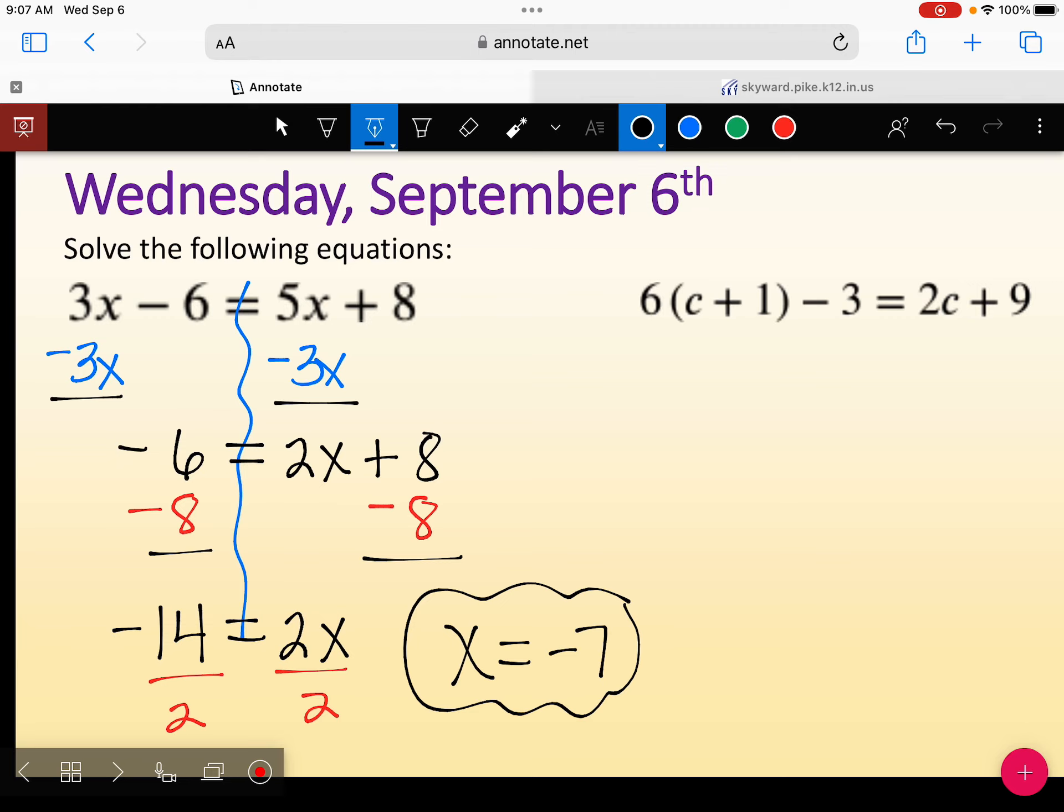Anybody want to volunteer their answer for the second question? I saw a lot of decimals and fractions. What'd you get? 1.5. Anybody else get 1.5? What'd you get? 3 over 2. 3 over 2 is 1.5. Yeah, 3 over 2. That's the fraction. Or you could write it as a decimal and get 1.5.